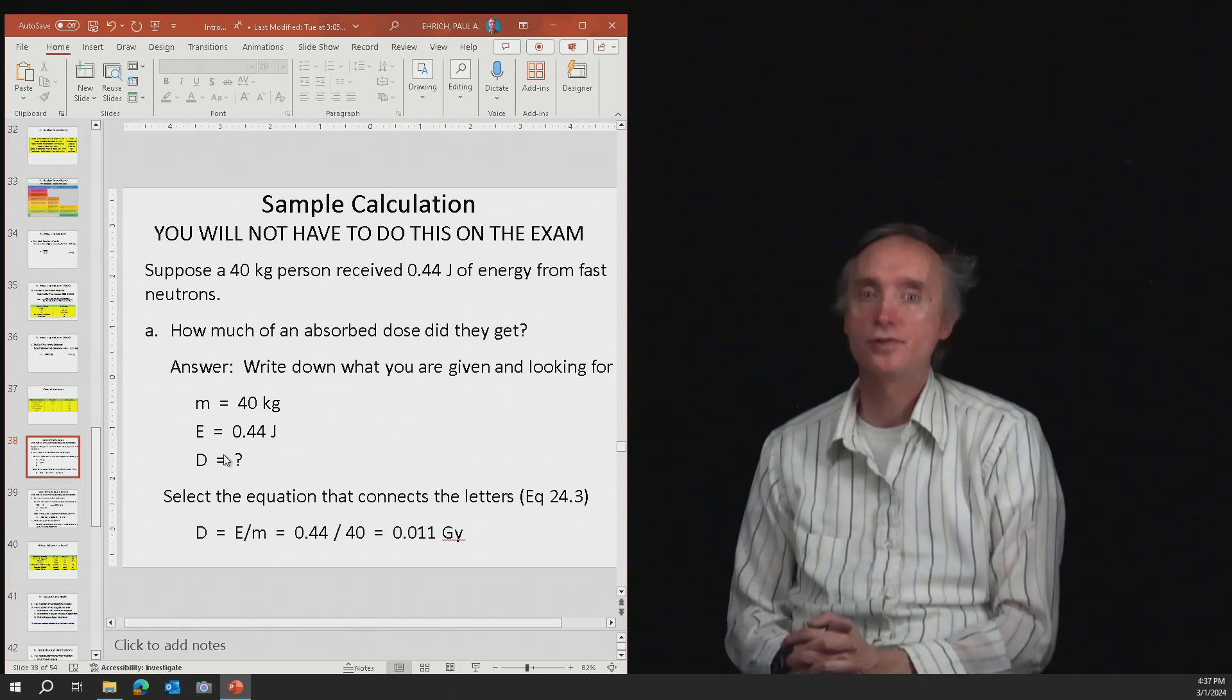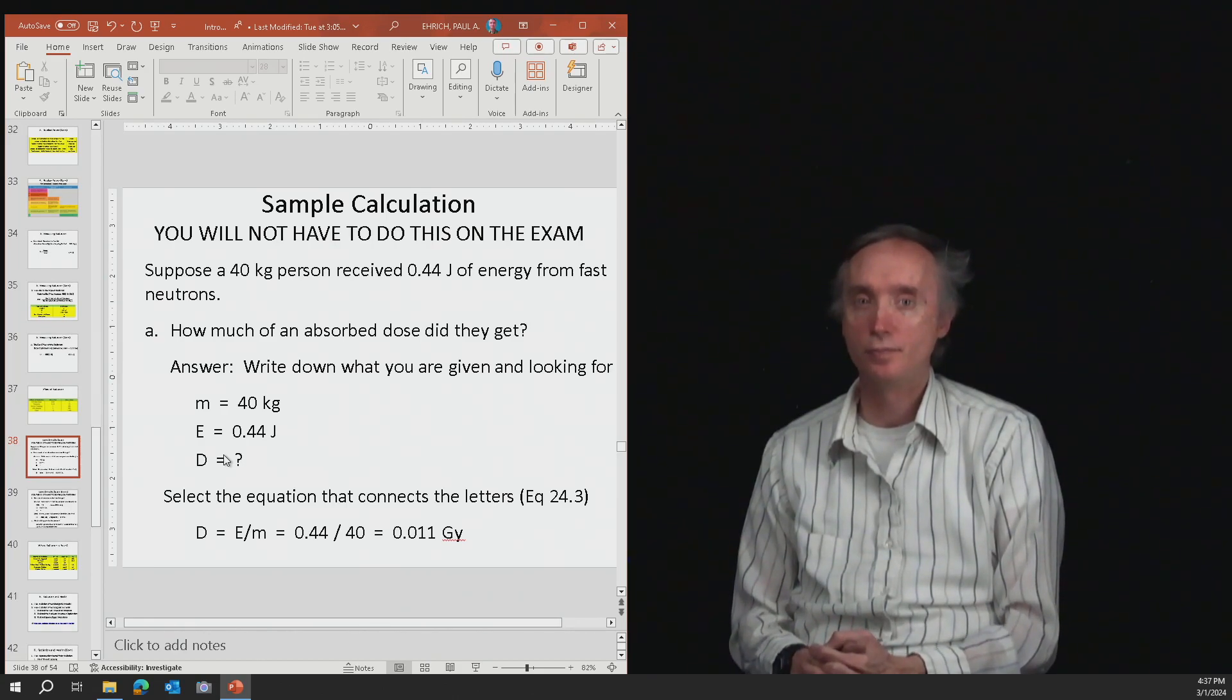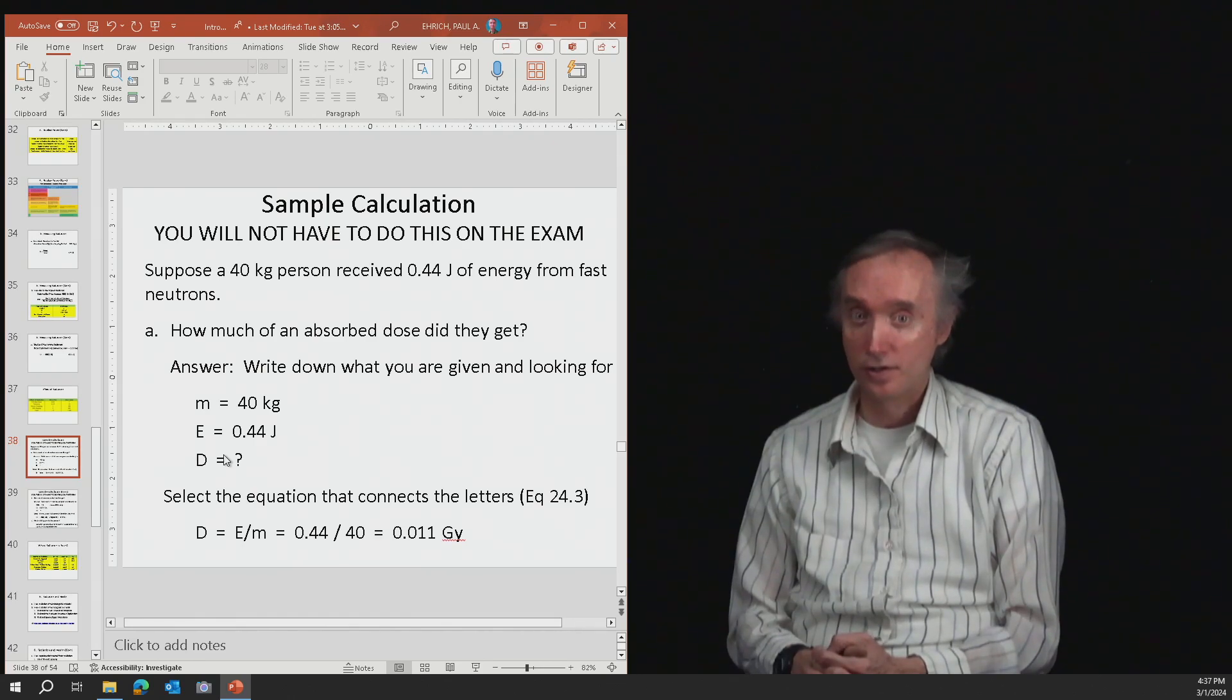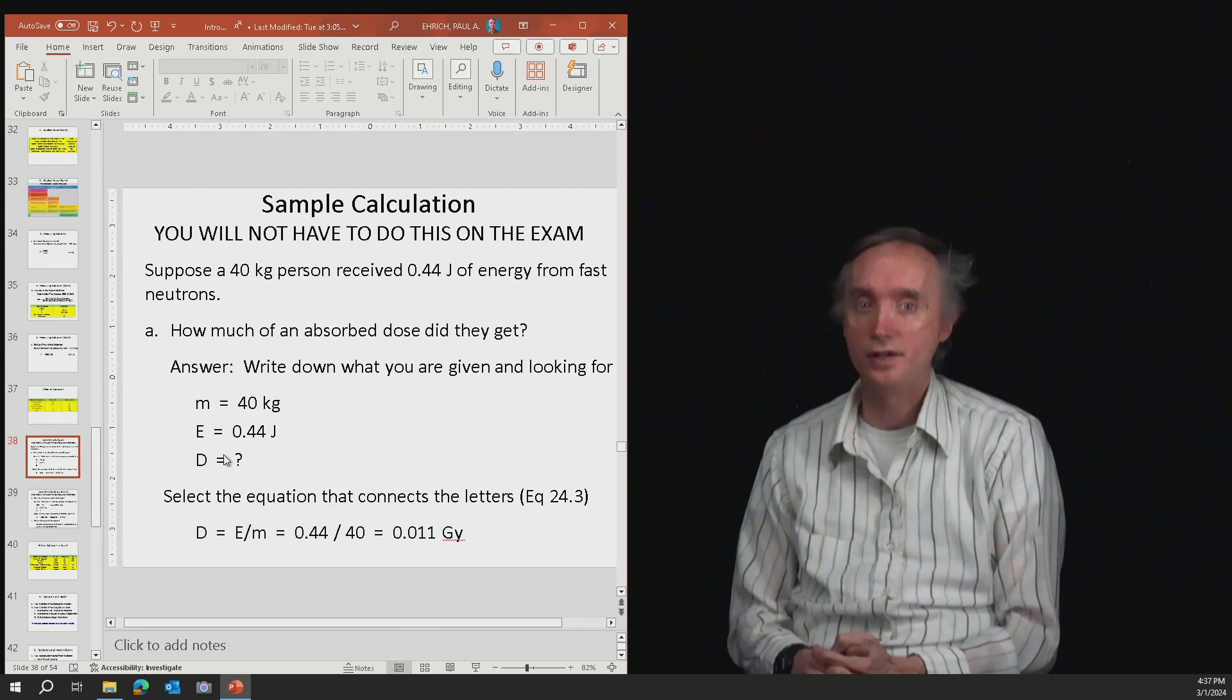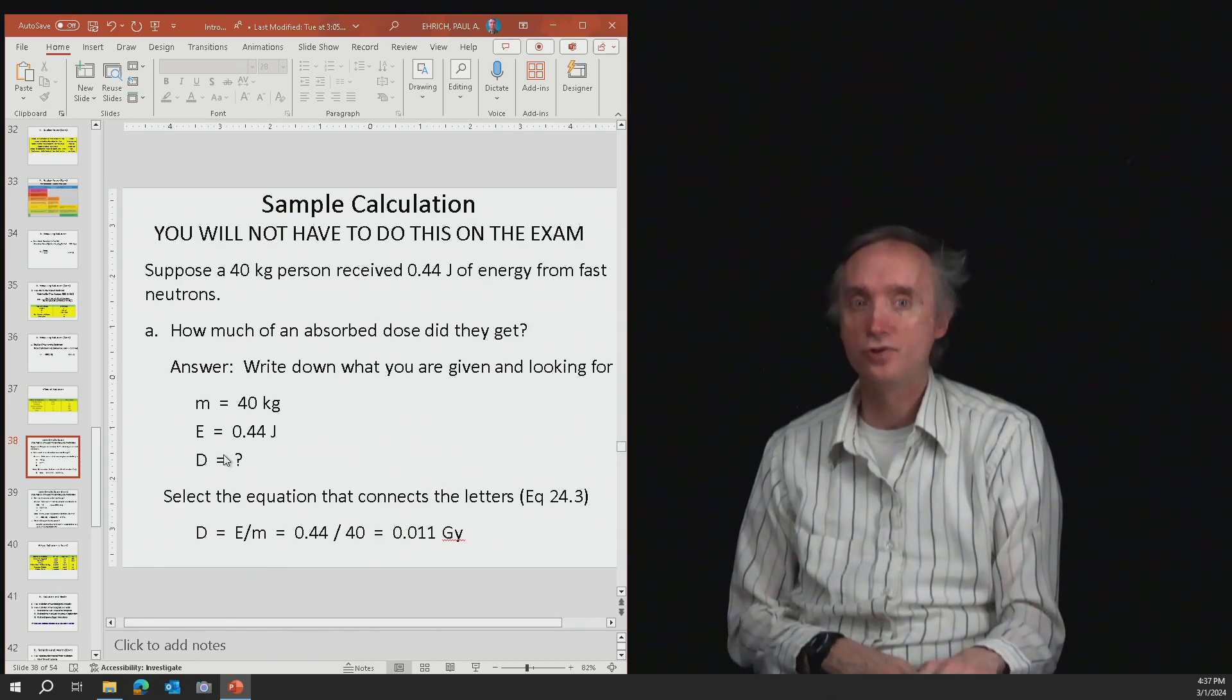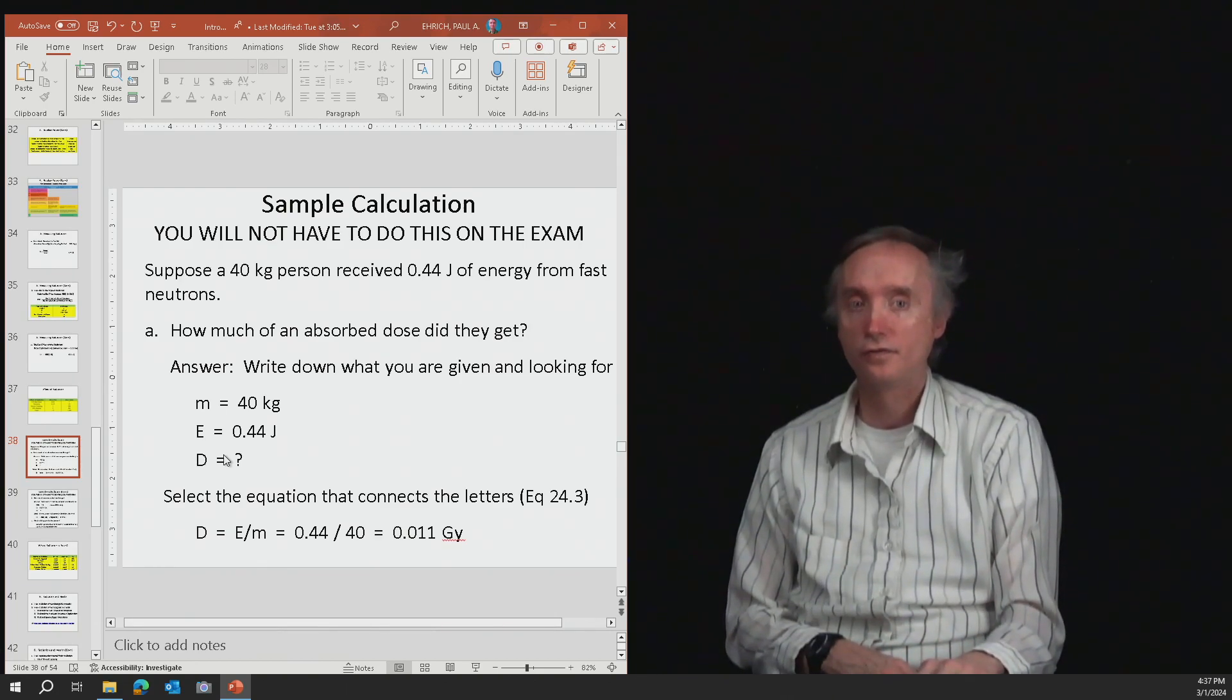So here's a sample calculation, but notice it says in big, friendly letters, you don't have to do this on the exam. So how much of an absorbed dosage did they get if a 40-kilogram person received 0.44 joules of energy from fast neutrons?